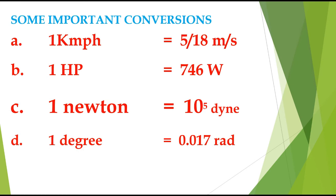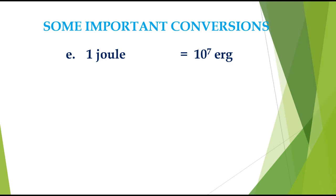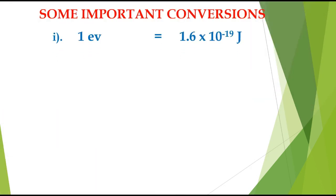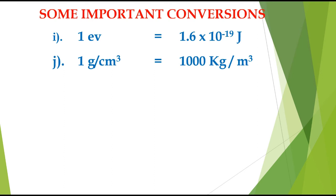1 degree equals 0.017 radian. 1 Joule equals 10⁷ erg. 1 calorie per gram equals 4180 Joule per kilogram. 1 Tesla equals 10⁴ gauss — Tesla is the MKS unit and gauss is the CGS unit of magnetic flux density. 1 electron volt equals 1.6 × 10⁻¹⁹ Joule.